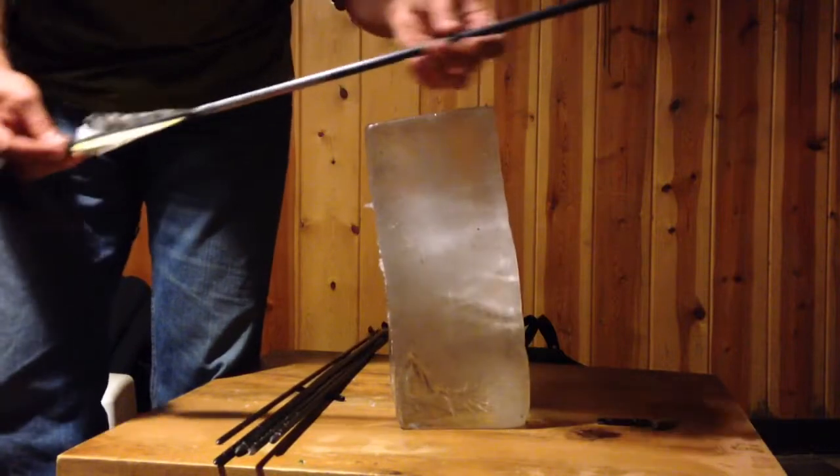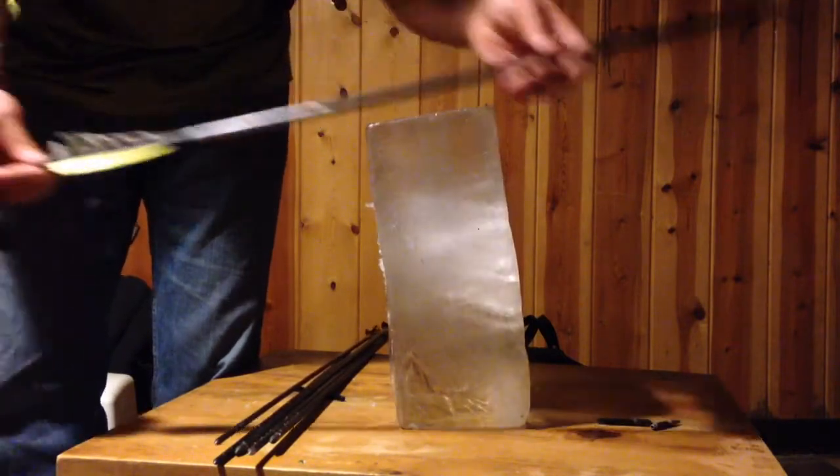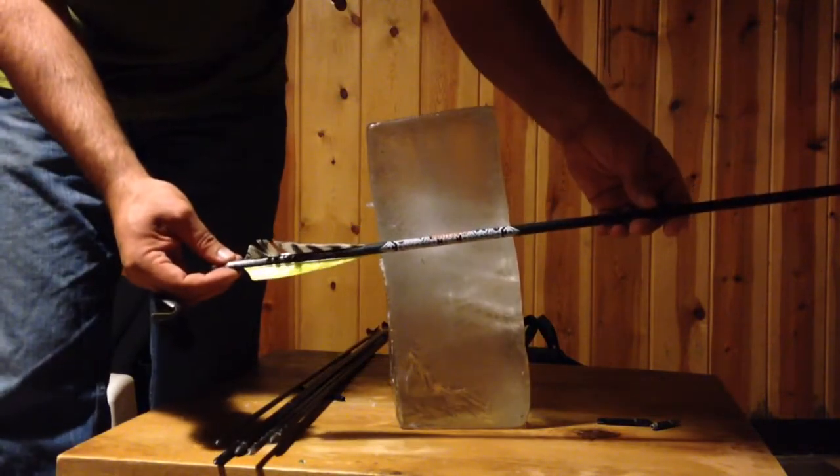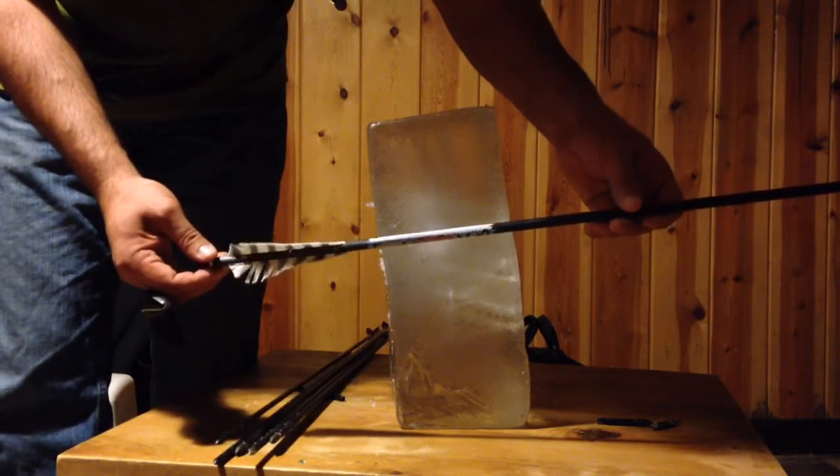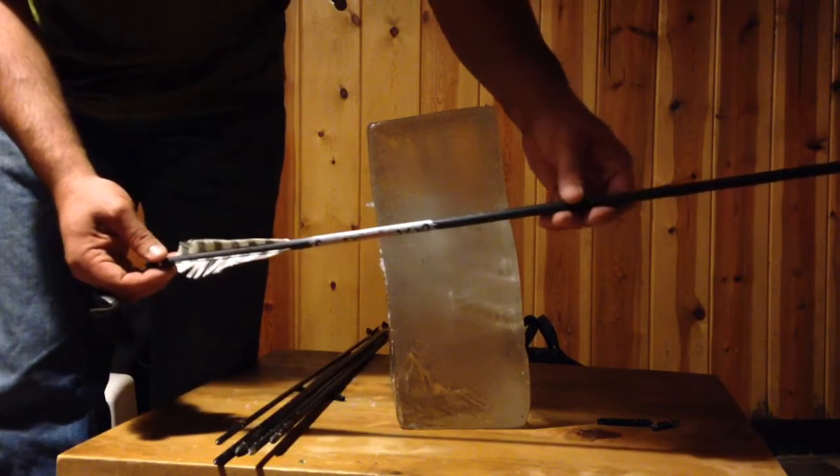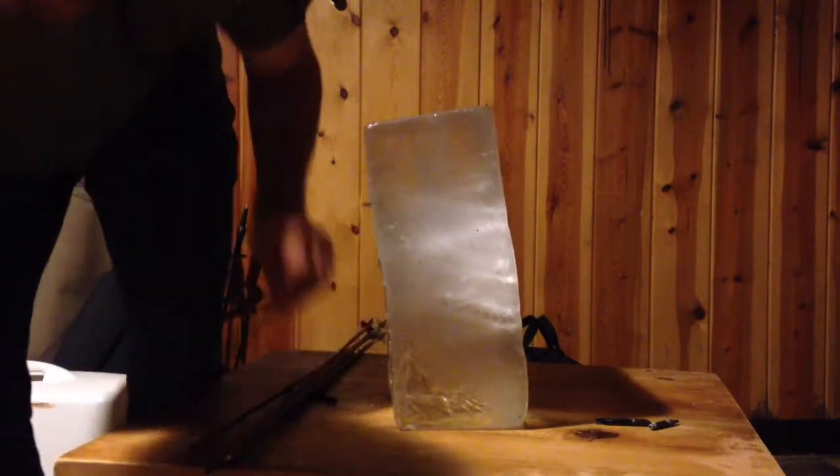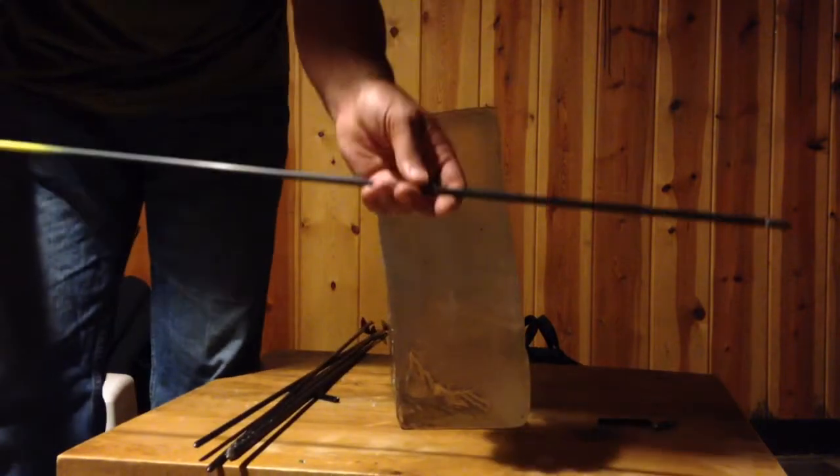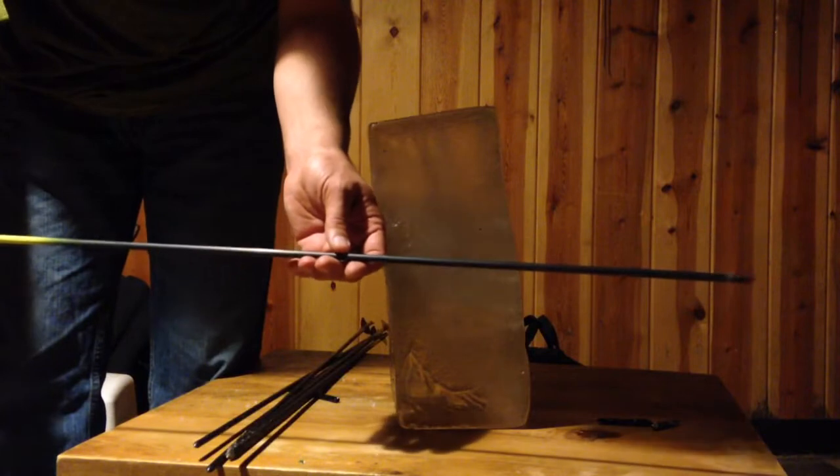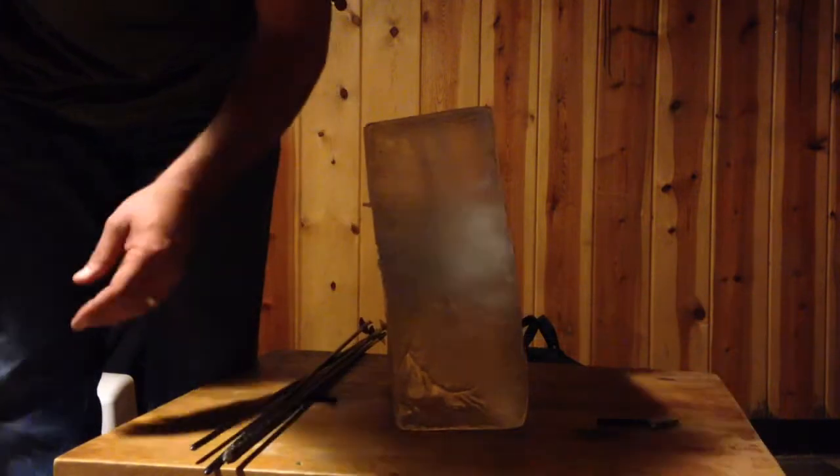We're going to be doing a little bit of penetration, showing what the different size arrow shafts will do. This is a Black Eagle Magnum. Okay, then we have a Gold Tip 400 standard size.